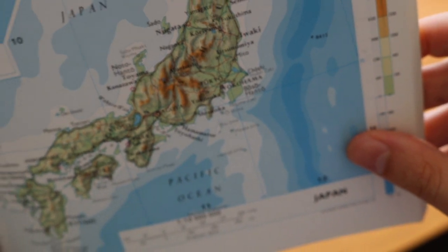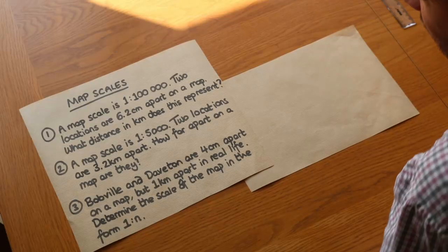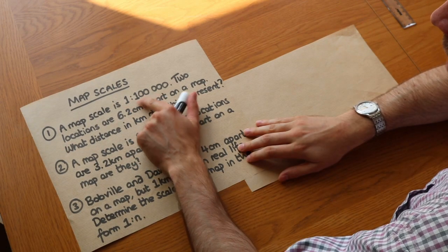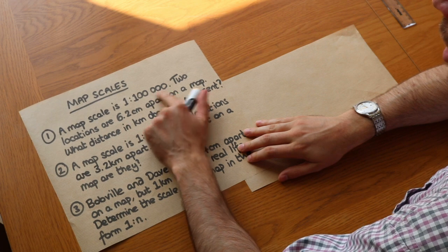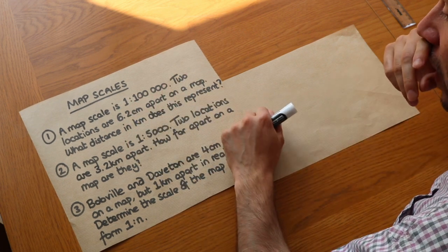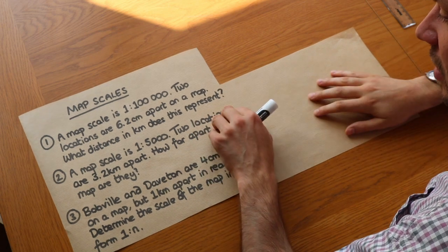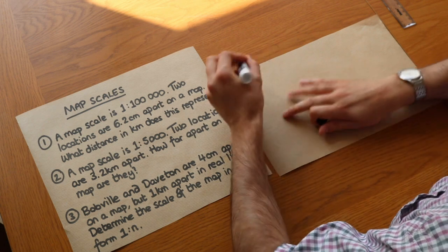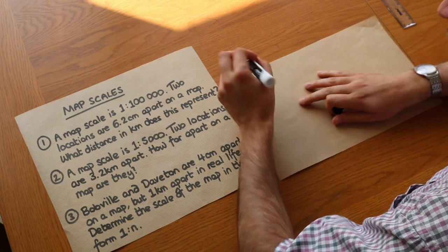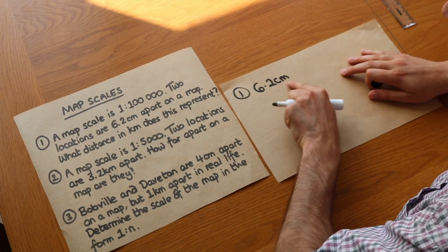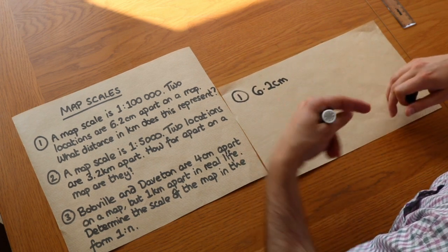Now let's use that to solve some of these questions. A map scale is 1 to 100,000, that means that real life is a hundred thousand times bigger than our map. Two locations are 6.2 centimeters upon a map, what distance in kilometers does this represent?